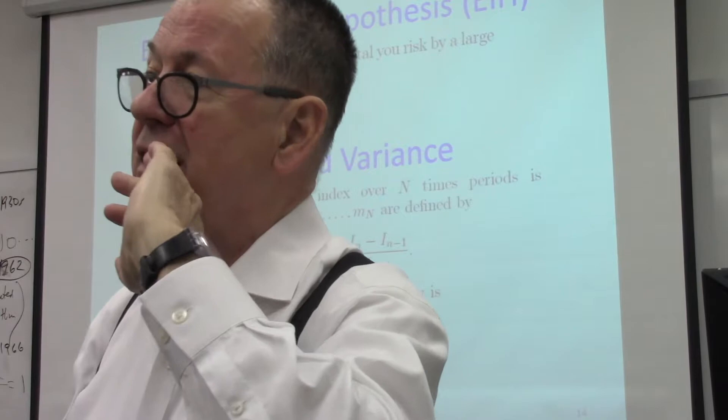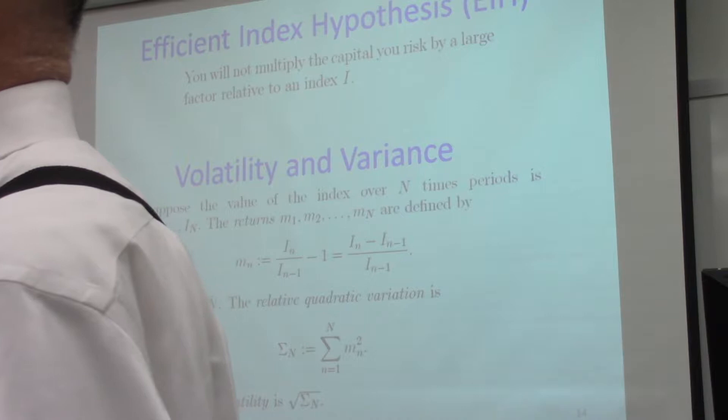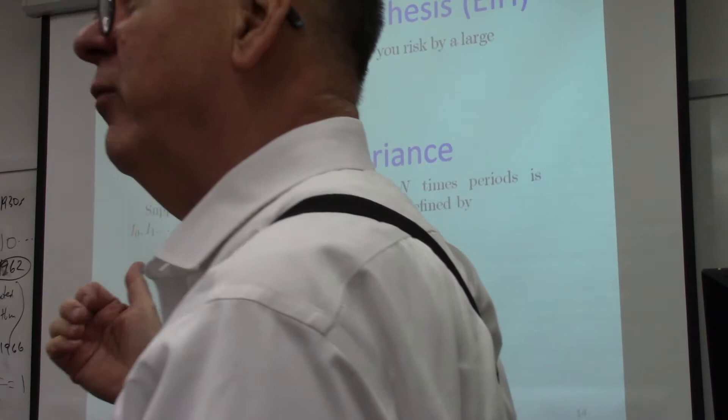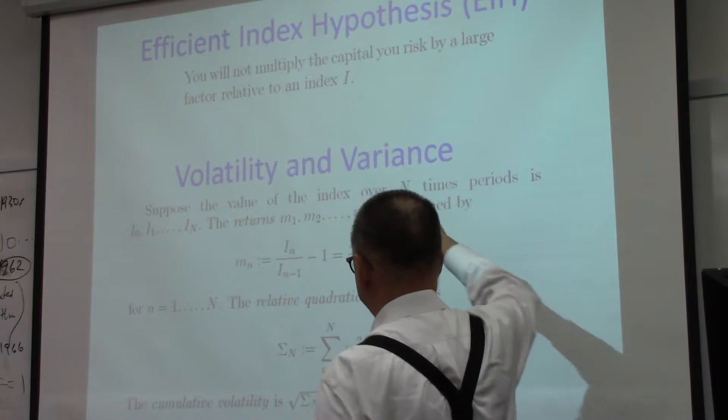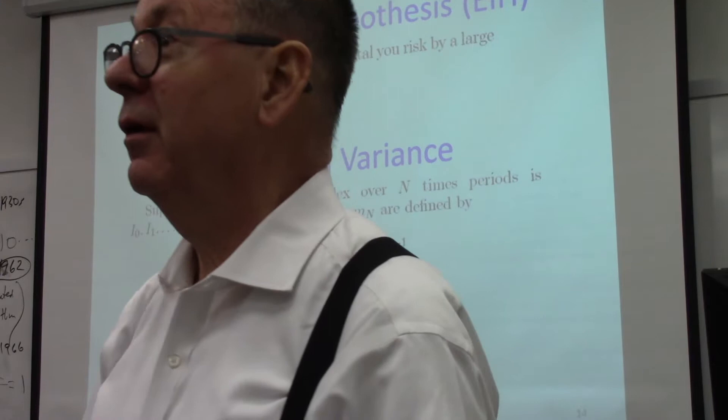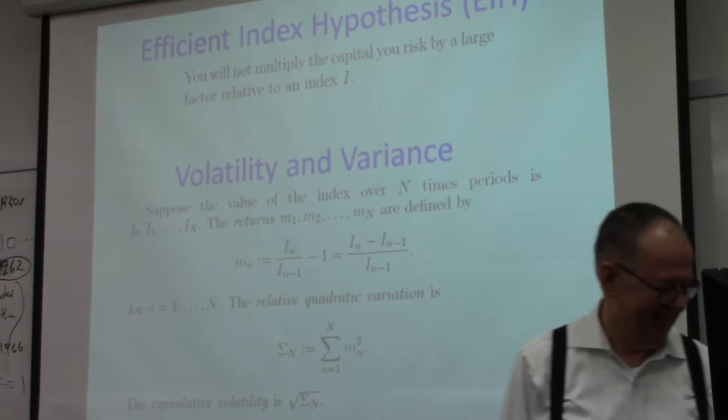Brownian motion is kind of an idealized model of statistical evolution. In this theory, Brownian motion is not an assumption — it's a consequence. A version of Brownian motion is a consequence of our hypothesis.